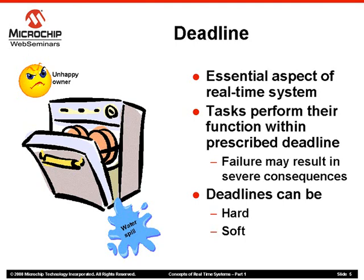When the deadlines are absolute, the real-time system is called a hard real-time system. The tasks in a hard real-time system are governed by rigid time constraints. When the deadlines are relaxed, a real-time system is called a soft real-time system. The tasks in a soft real-time system do not have rigid time constraints. The deadline for the water manager task should be absolute — otherwise the probability of spilling water would be quite high, resulting in many unhappy dishwasher owners with frequent wet floors. On the other hand, a display manager task may have a relaxed deadline. Obviously, if a real-time system task fails to meet its deadline, it may have dire consequences.